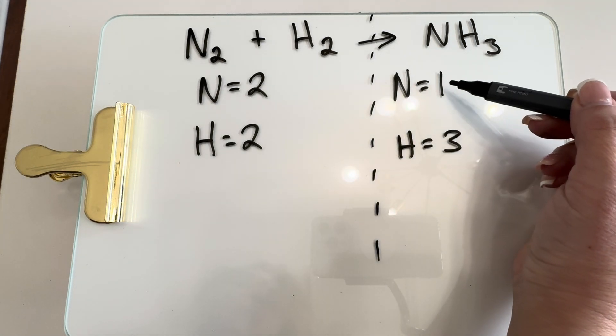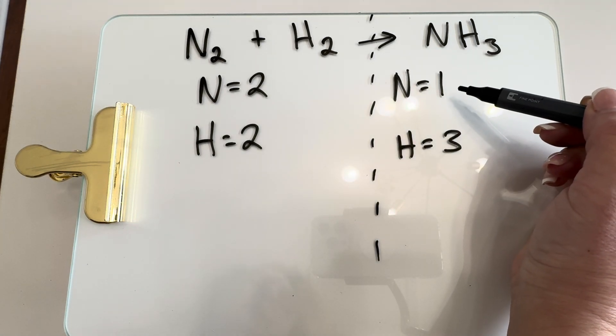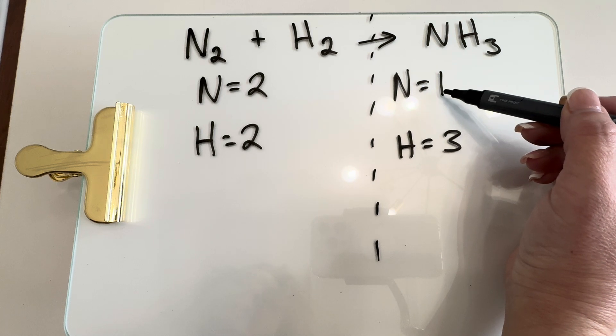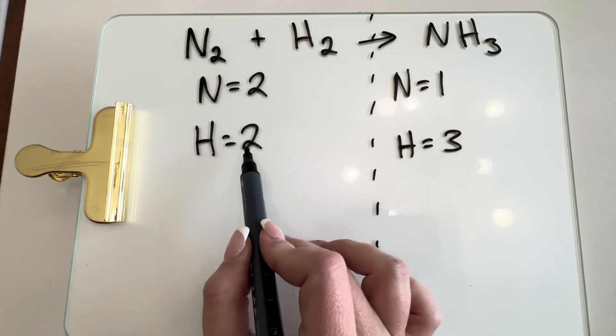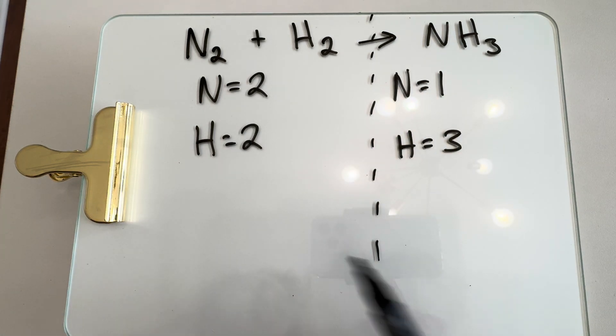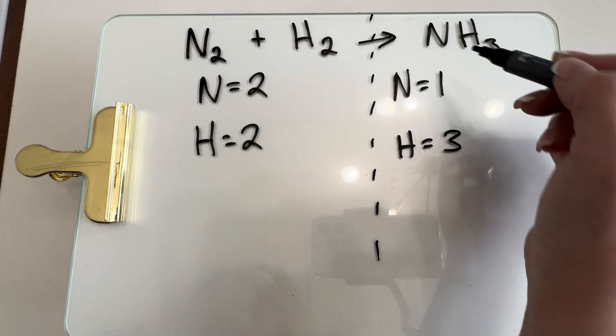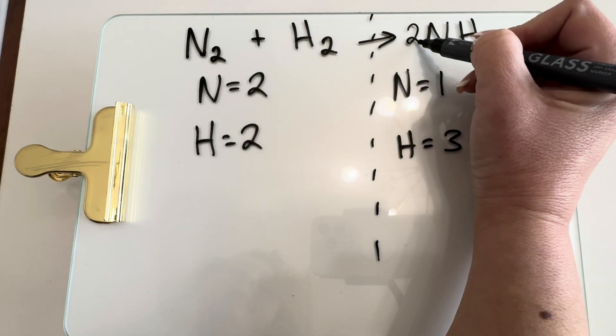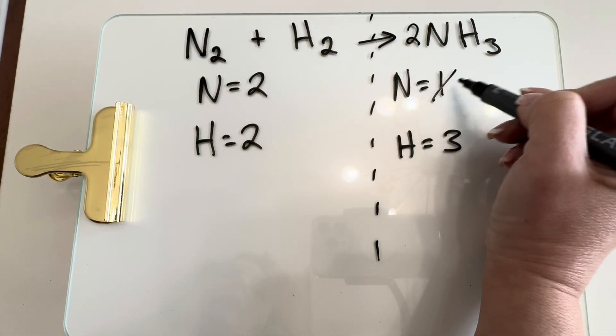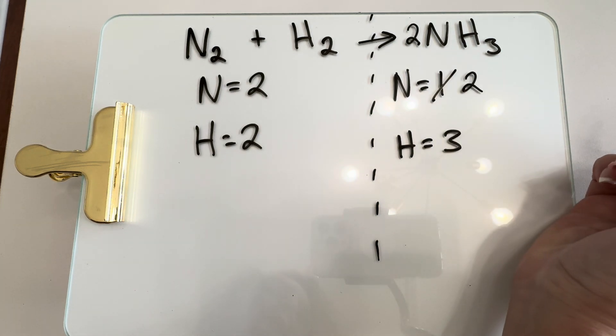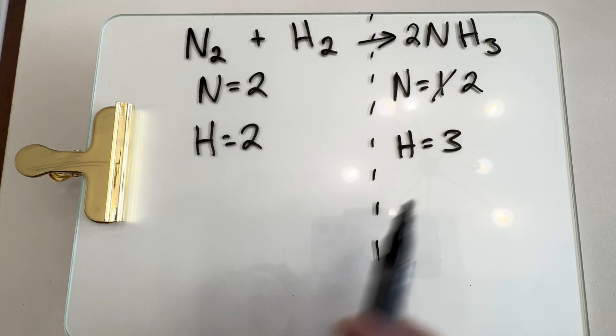Our lowest number is one, so we're going to start on our product side. We want this to turn into an even number so we can match the other side. To do that, we put a two in front because two times one gives us two, and now we have an even number that matches our reactant side.